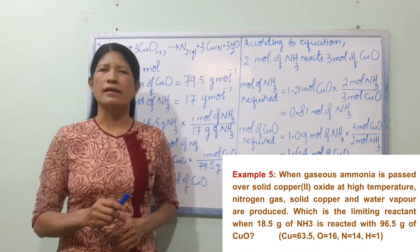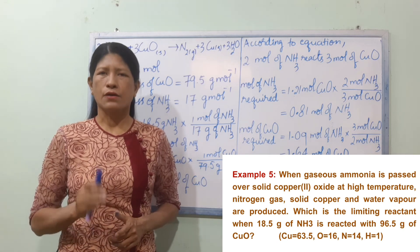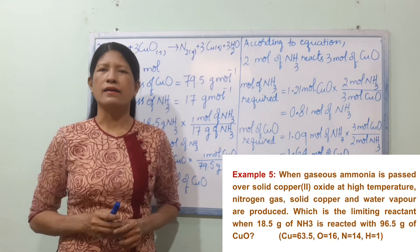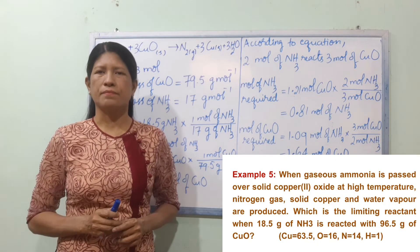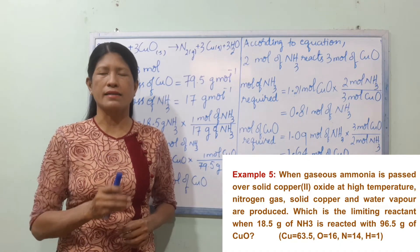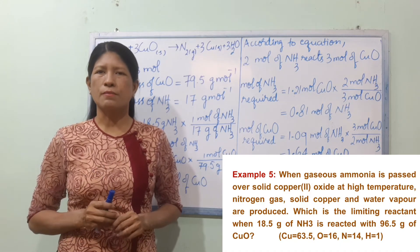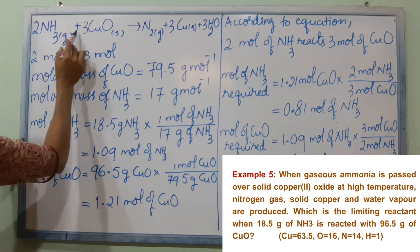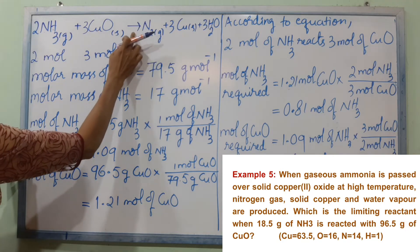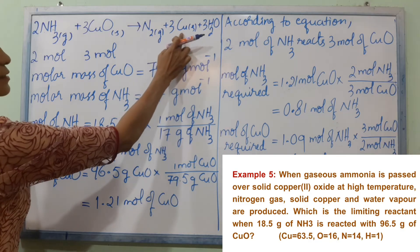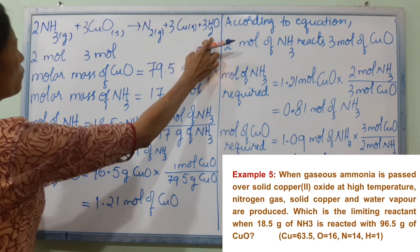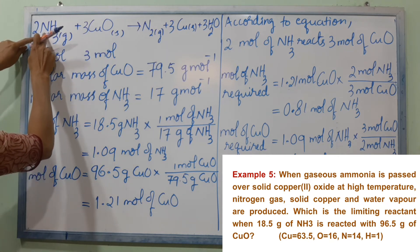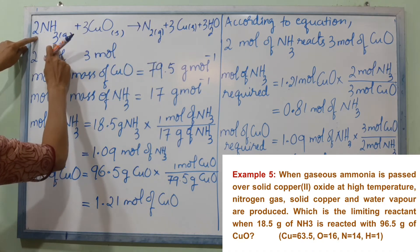In this example, ammonia gas is passed over solid copper oxide to produce copper, nitrogen, and water vapor. The equation is: NH3 + CuO → N2 + Cu + H2O. We need to balance this equation first.